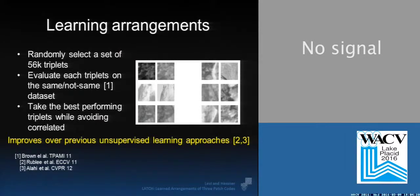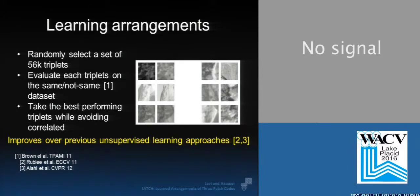We evaluate each triplet on each of the same-not-same patches. Then we take the best-performing triplets, in the sense that a good triplet is one that gives the same bit for the two same patches and a different bit for the two not-same patches. We take the best-performing triplets but avoid choosing highly correlated triplets. We show in our paper that it actually improves over previous results that use unsupervised learning, such as ORB and FREAK.